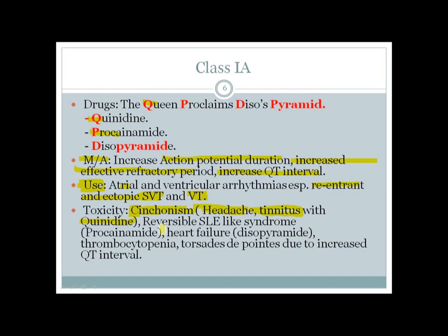Procainamide can cause a reversible SLE-like syndrome — similar to hydralazine and isoniazid — with anti-histone antibodies producing drug-induced lupus. Disopyramide can cause heart failure. Side effects shared by all class 1a agents include thrombocytopenia and, importantly, torsades de pointes due to QT prolongation. Any antiarrhythmic that prolongs the QT interval can cause torsades de pointes — a very dangerous complication.